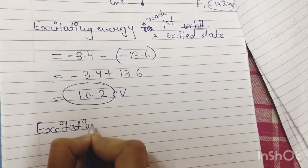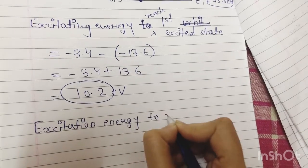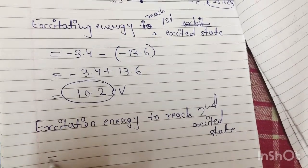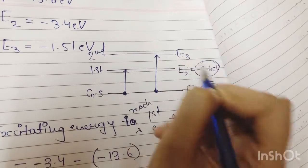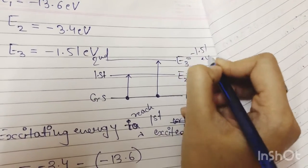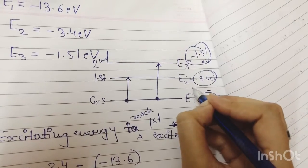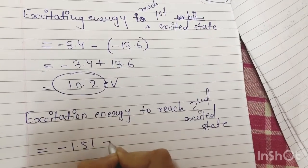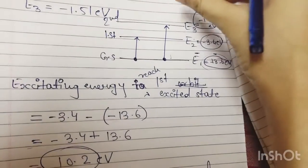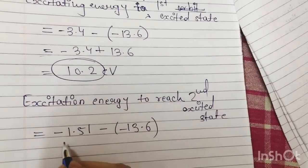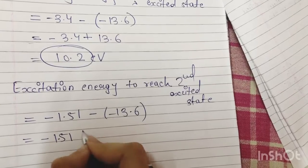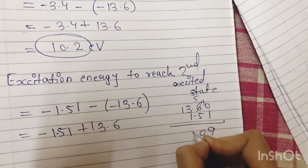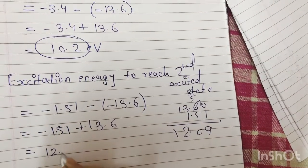Now excitation energy required by the electron to reach the second excited state: suppose the electron is at the ground state and wants to go to the second excited state. E3 - E1 = (-1.51) - (-13.6) = -1.51 + 13.6 = 12.09 electron volt. So the electron needs 12.09 electron volt of energy to go from the ground state to the second excited state, which is the third orbit.